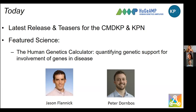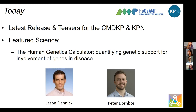Our very own Jason Flanik, one of the principal investigators on the portal activity and also really responsible for a lot of the science that goes into the portal, will be talking about the human genetics calculator. And with him will be Peter Dornbos, his postdoctoral fellow. We're going to be talking not only about what will be to come on the portal, but the science of it — the rationale, motivation, and approach behind the method. If there are any questions, please place them in the chat and we'll make sure we get to them at the end.